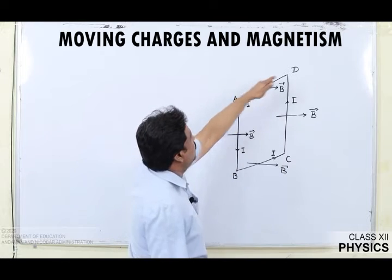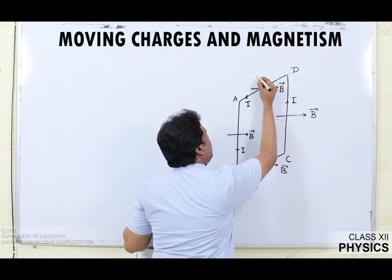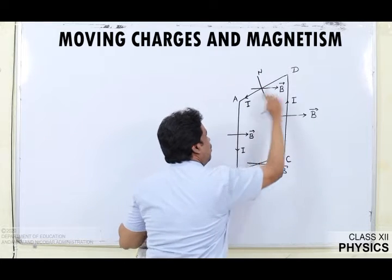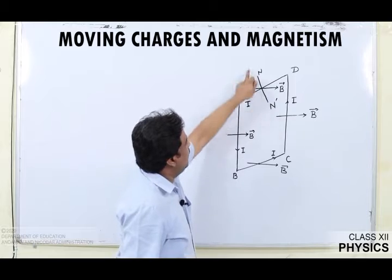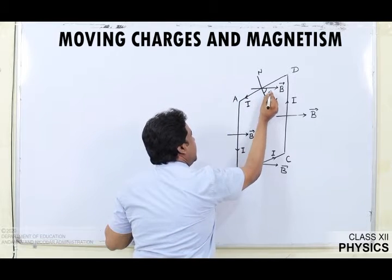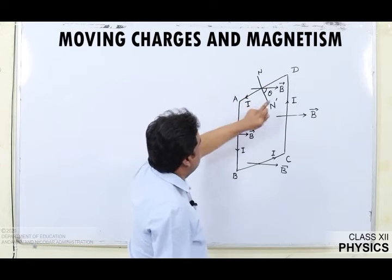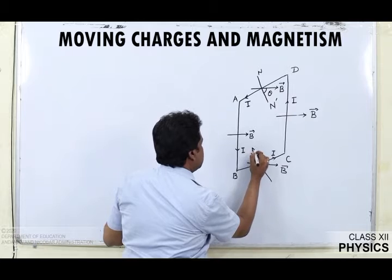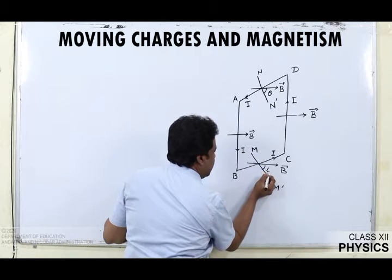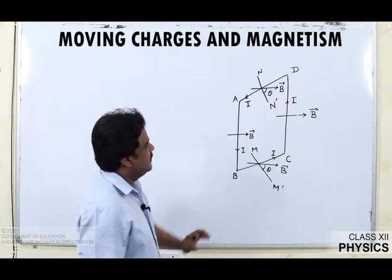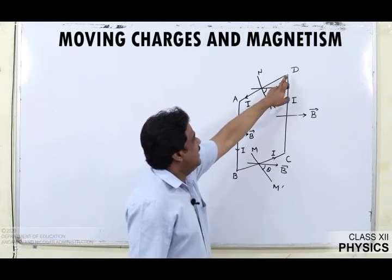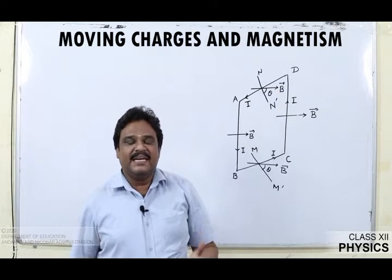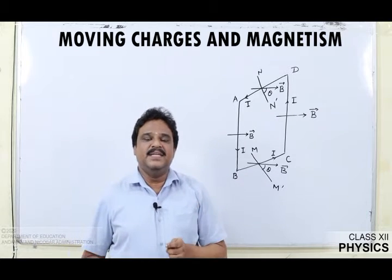Let the normal to the plane of the loop — you can see this is the plane, and the normal is the line NN'. The normal to the plane of the loop makes an angle theta with the magnetic field. Similarly, I can represent the same as MM'. The angle made is theta. Focus on one arm, say DA — DA is a conductor carrying current I placed in a magnetic field, and it experiences a force.